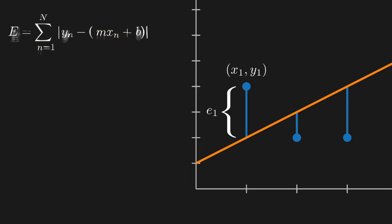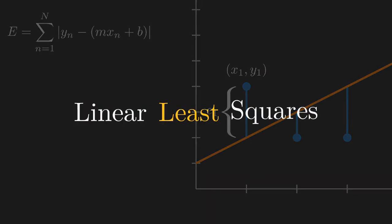Now we have an expression for the total error, and we want to make this error as small as possible. So we'll find the minimum of the error function by setting its first derivatives to 0 and solving for m and b. Since we're minimizing, this is where the term least comes in in linear least squares.